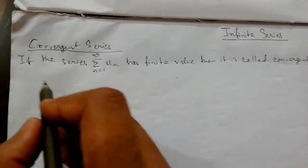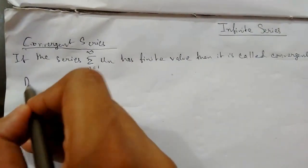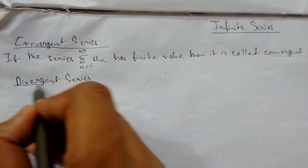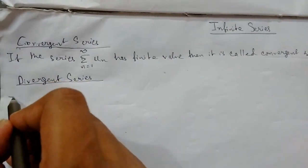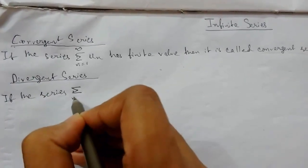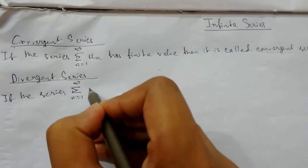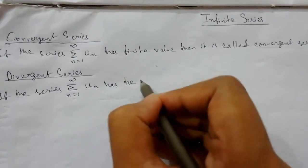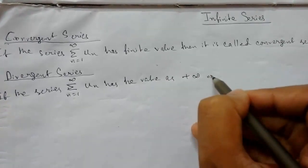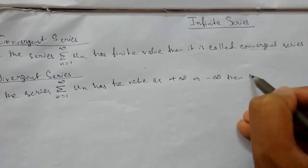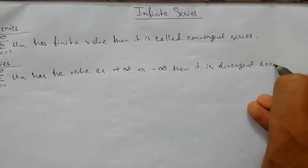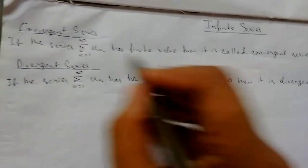Second is divergent series. If the series summation n from 1 to infinity of u(n) has the value as plus infinity or minus infinity, then it is a divergent series. So these two are the main types of series.